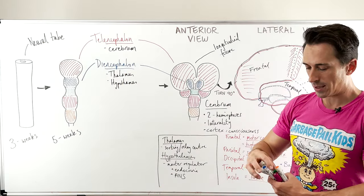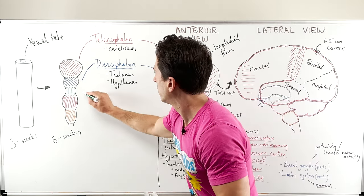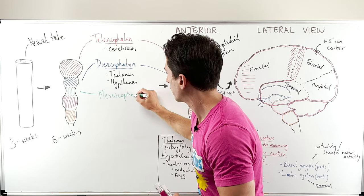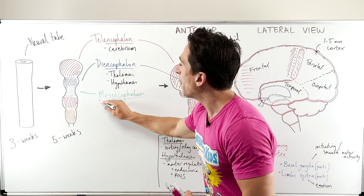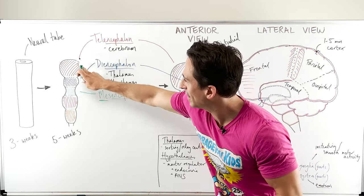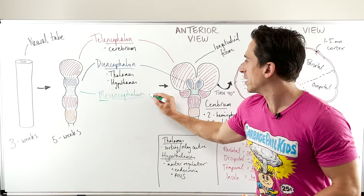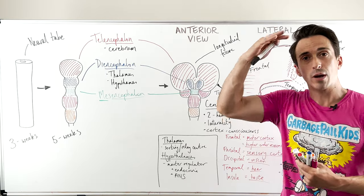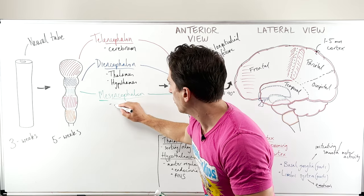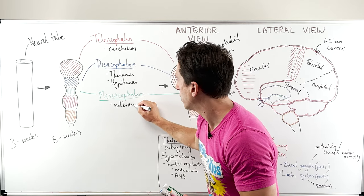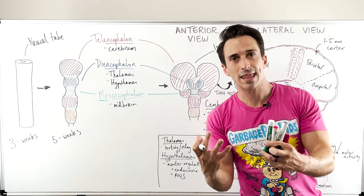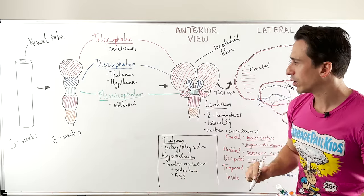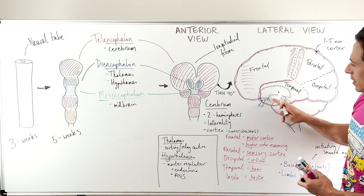The next part is the mesencephalon. Encephalon means brain and 'mes' means middle — it's the middle of the brain. The mesencephalon actually comprises the midbrain, which is the most superior or upper aspect of the brainstem. I'll talk about its function together with all aspects of the brainstem, and I've done a very specific video on the individual aspects of the brainstem if you'd like more detail.